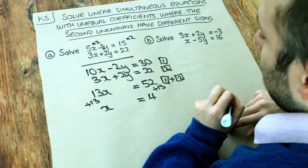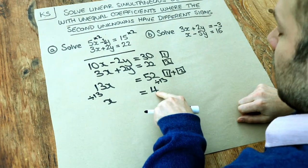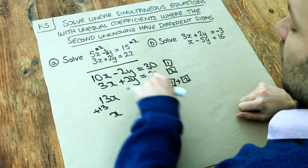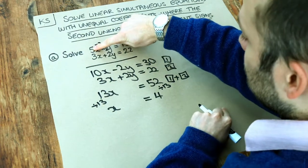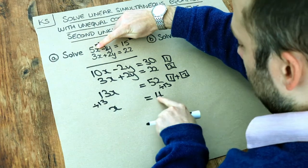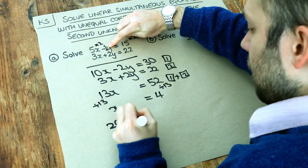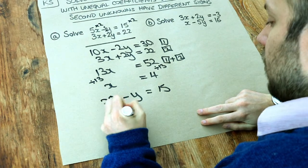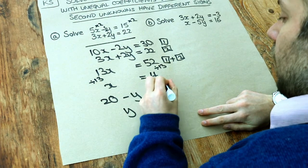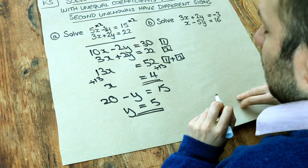And again, the last step of solving simultaneous equations is we use that value of x we know, in this case 4, and we substitute it into one of the original equations. I'm going to just substitute it into this first equation. So 5 times 4 is 20, subtract y is equal to 15. Well, 20 minus what is 15? Well, it's 5. So y is 5, and we have our answers for x and y. So x is 4 and y is 5.